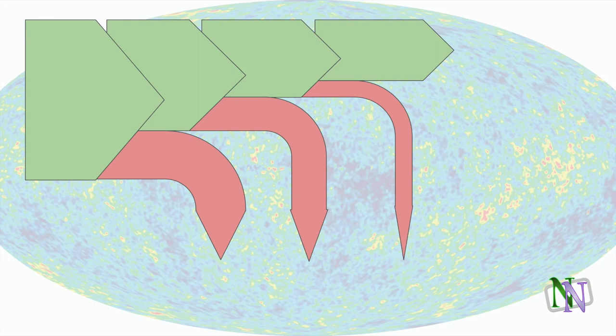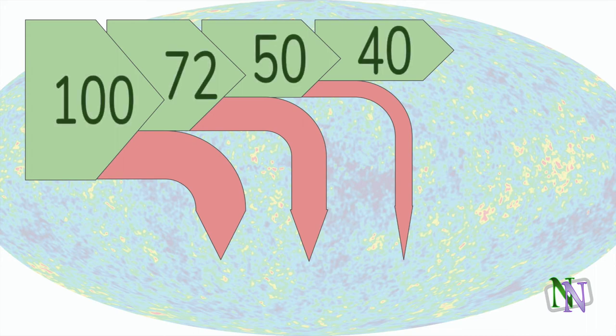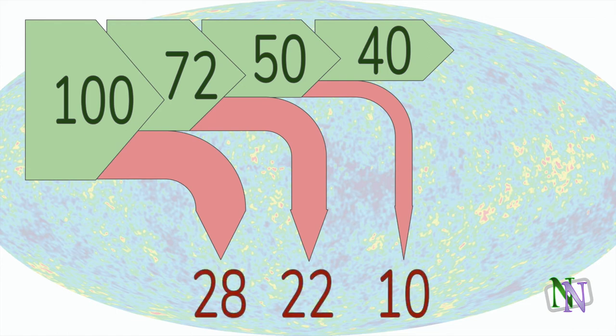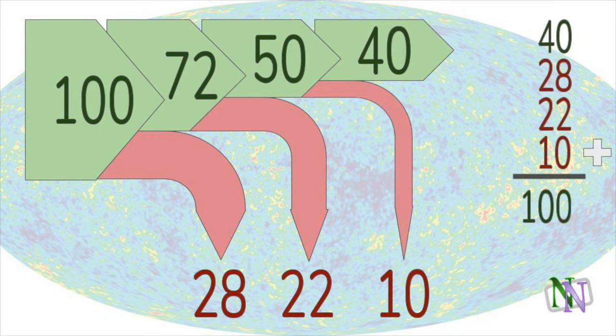The principle of conservation of energy means that we can often calculate unknown quantities, because we know that in an isolated system the total of the energies at the start of the process is equal to the total of the energies at the end. In the process illustrated here, the amounts of useful work are shown. We can use simple arithmetic to calculate the values of heat lost to the surroundings, and we can check the calculation by showing that 28 plus 22 plus 10 — the sum of all lost heat — plus the useful work of 40, adds up to the initial energy of 100.